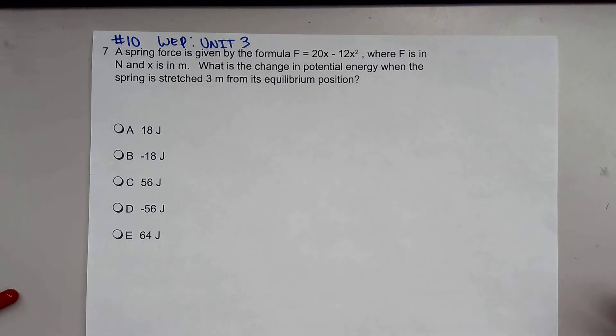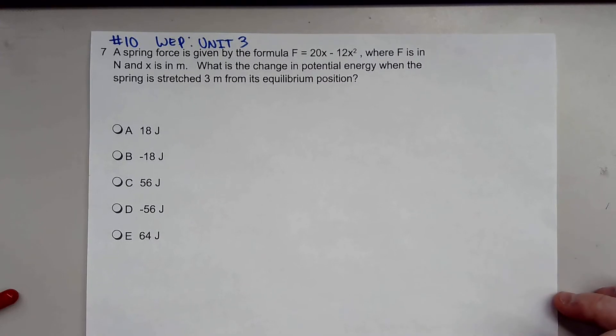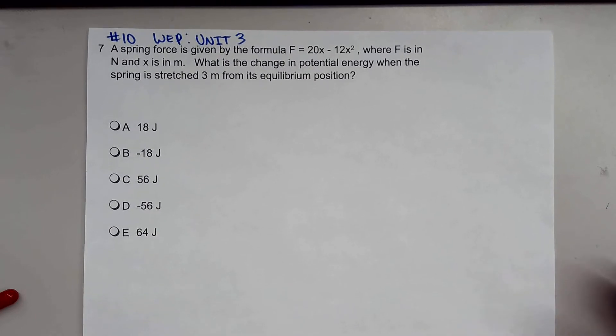A spring force is given by the formula F equals 20X minus 12X squared, where F is in newtons and X is in meters. What is the change in potential energy when the spring is stretched 3 meters from its equilibrium position?